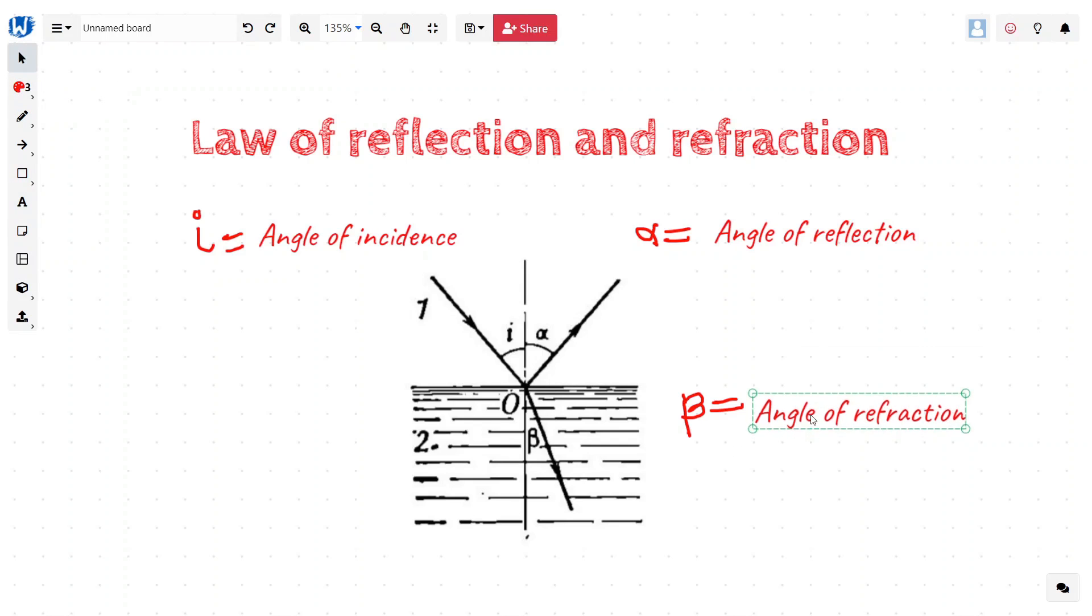If we know all these three angles, we should be exactly knowing how the light is traveling in one medium or another. Now, the whole idea of this video is to establish the relationship between these angles so that we can analyze the behavior of light in different mediums.